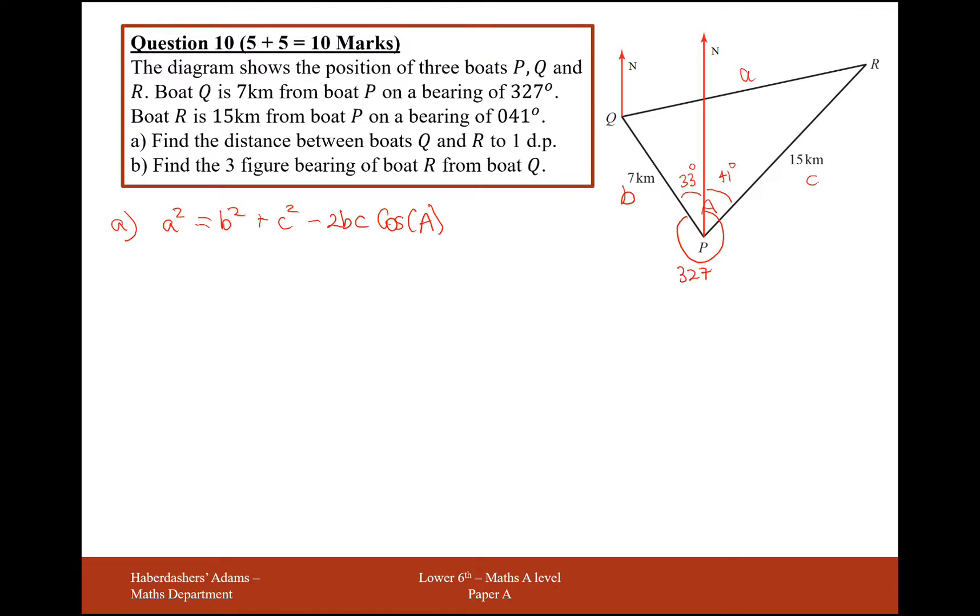So that angle there is going to be 74 in total. So A squared is going to equal 7 squared, substituting in our numbers now, add 15 squared, take away 2 lots of 7 times 15 times cos of 74.